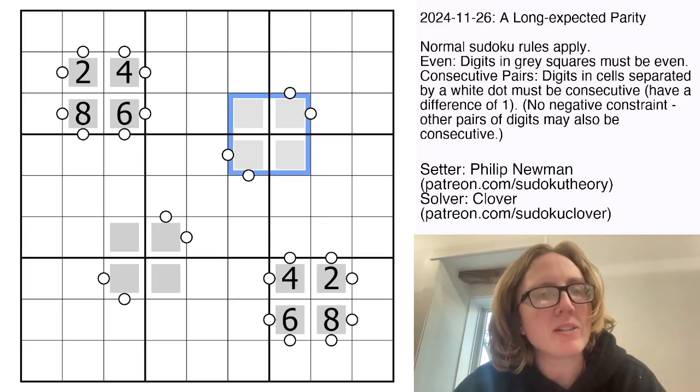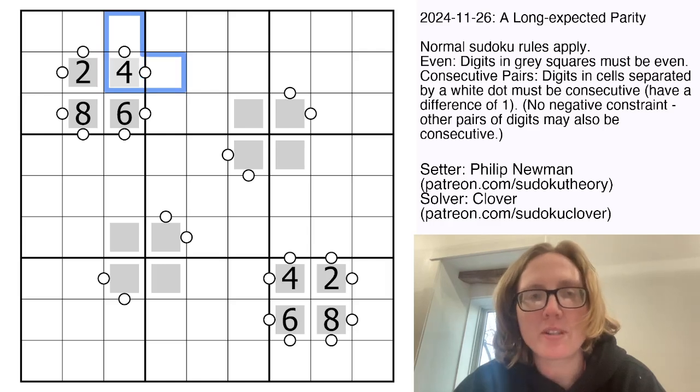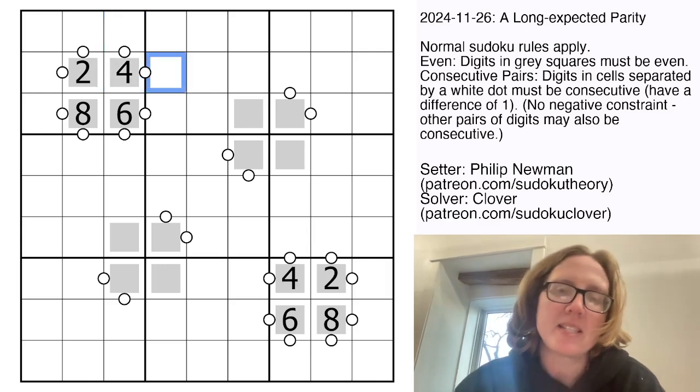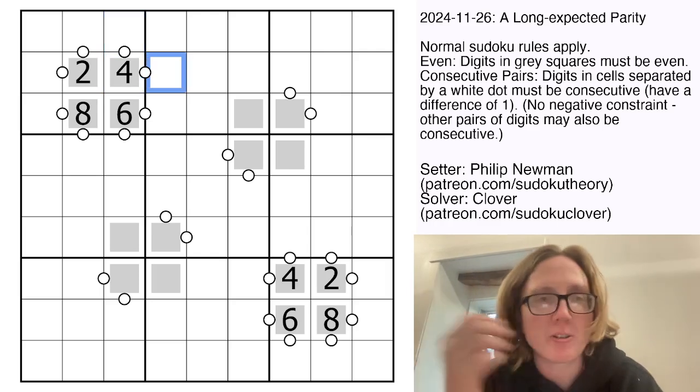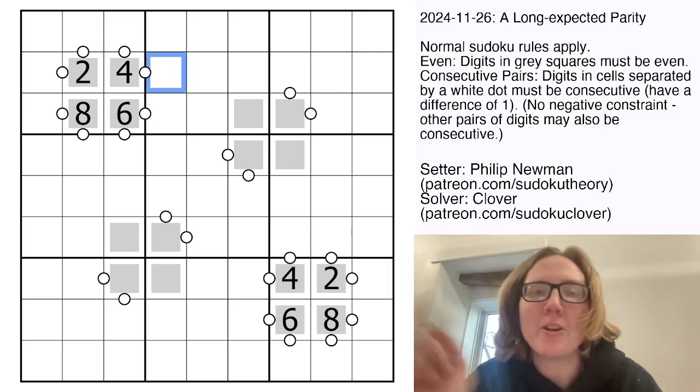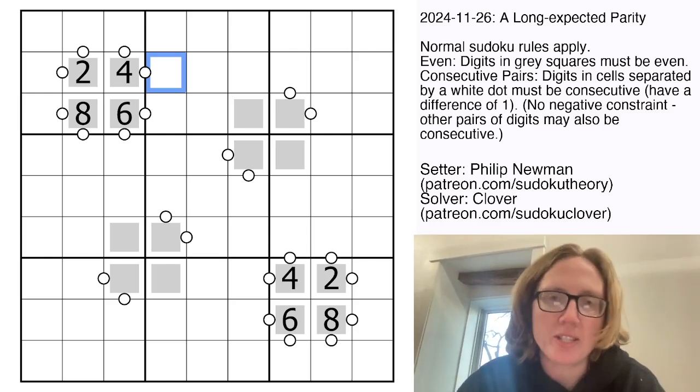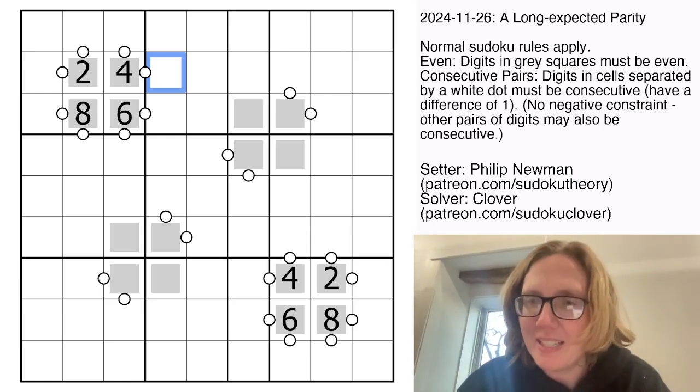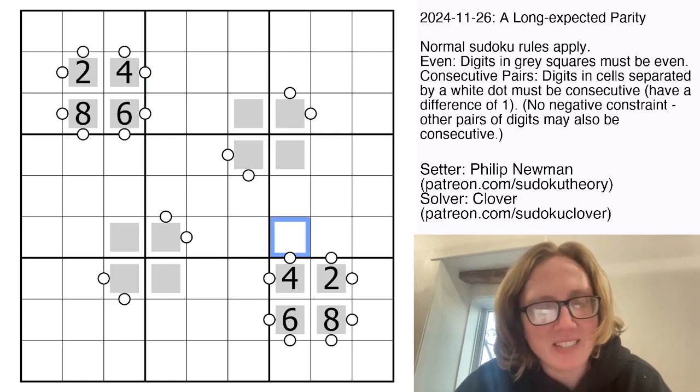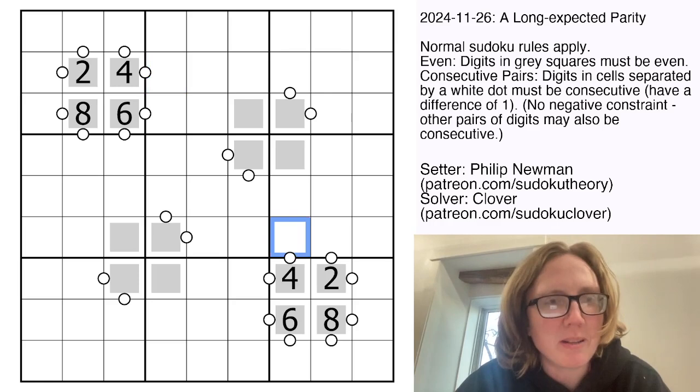And finally, we have some white dots. Digits that are separated by a white dot have to be consecutive, meaning one of them is one greater or one less than the other. Not all possible white dots have necessarily been given. So this is a beautifully symmetrical-looking grid. Let's see if it plays out as symmetrically while we're solving it.